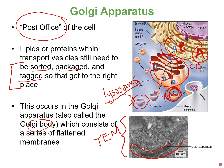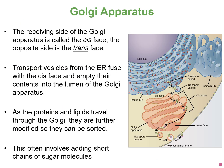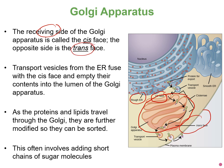Here is an image produced through transmission electron microscopy showing a series of flattened sacs that make up the Golgi apparatus. Remember, the cis face is the receiving side of the Golgi where vesicles arrive from the rough ER, and the trans face is where vesicles exit after modification. As molecules move through the Golgi — the post office of the cell — they are further modified and sorted according to their next destination. The Golgi typically adds different types of sugar molecules, forming short carbohydrate chains, to the proteins being modified.